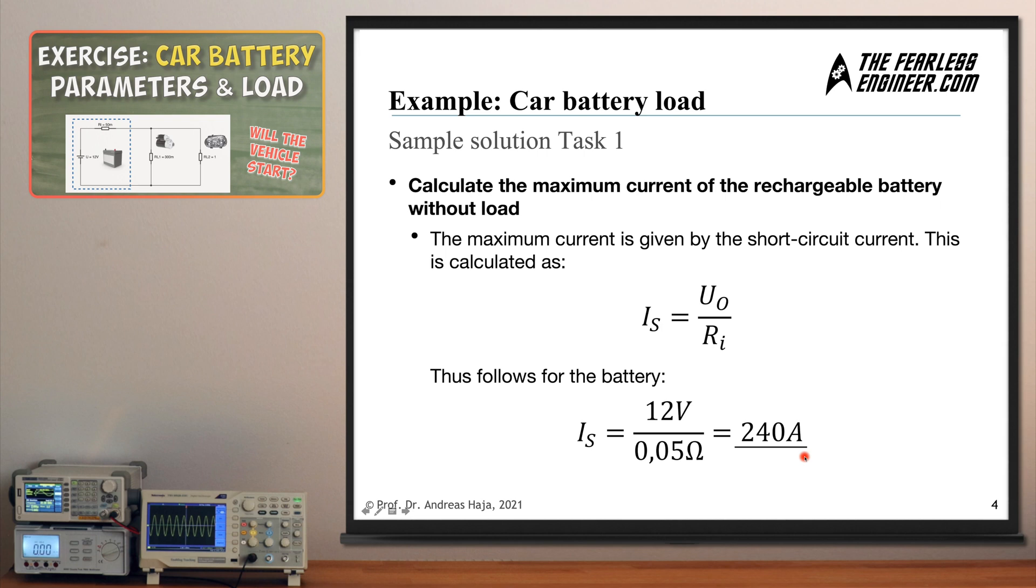That's the theoretically maximally possible current flow which the car battery can generate. And this also gives you the reason why you should not fool around with car batteries because the currents which can flow from such a battery are really large and this can be a very dangerous value even if combined with a comparatively low voltage of only 12 volts. So 240 amps is the max which the car battery can supply.